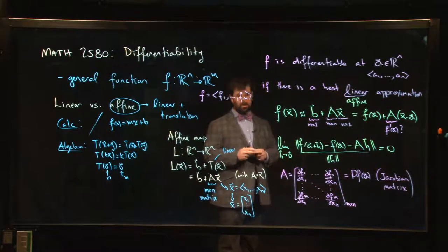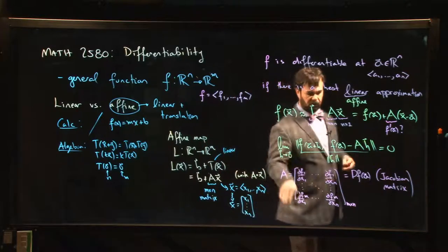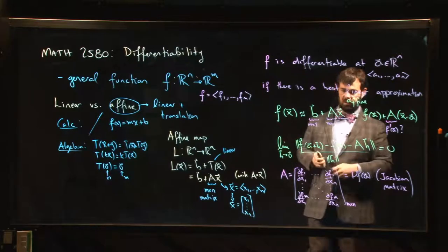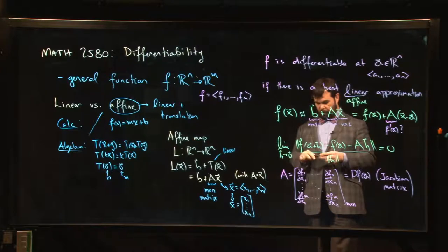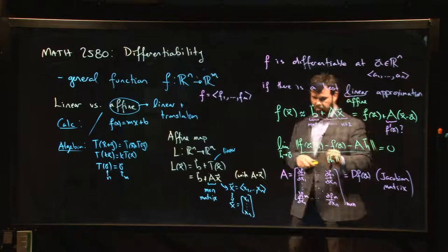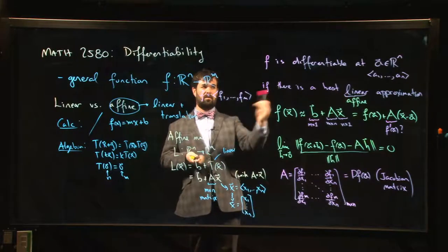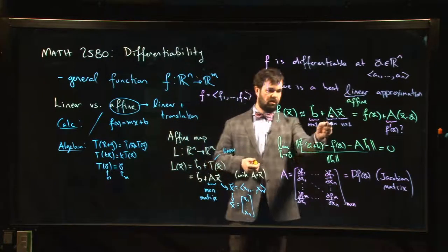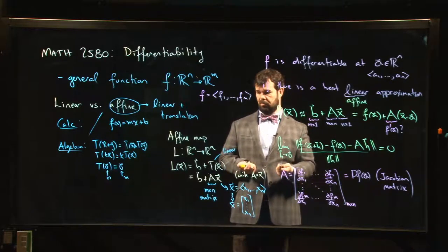So this thing, with a bit of work, you can check that this matrix does fall out. It's the unique matrix that will make this limit zero if your function is differentiable. So in particular, if all of the first order partial derivatives for all of the components of your function are continuous, your function will be differentiable, and this matrix A, which gives you this approximation, it's always going to be this matrix of partial derivatives.